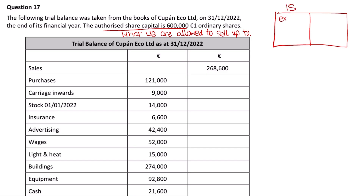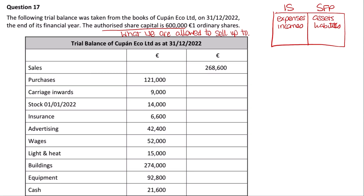In the income statement we have expenses and incomes; in the statement of financial position we have assets and liabilities. Sales goes into the income statement. Purchases is income statement. Carriage inwards — the cost of transferring goods to us — is income statement. Opening stock is income statement. Insurance is an expense, so income statement, as are advertising, wages, and light and heat.